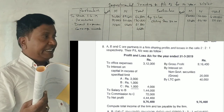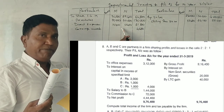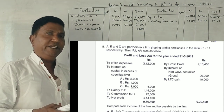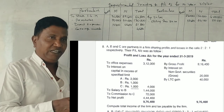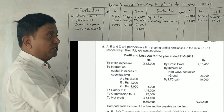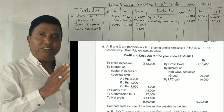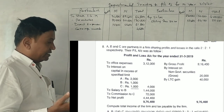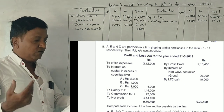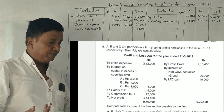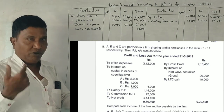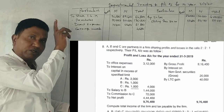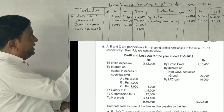Now, direct expenses. Advertisement, carriage inwards — this is a part of direct expenses in a trading account. This is not carriage outwards, so this is not income.